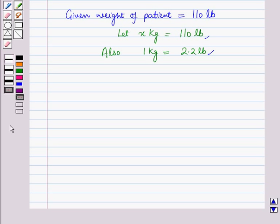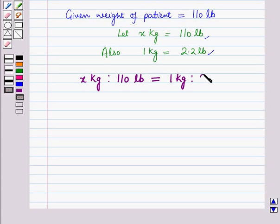From these two relations we set up an equation as: x kg is to 110 pounds equals 1 kg is to 2.2 pounds. Here we must note that on both sides of this equation, kilograms comes first then pounds. This is very important — it doesn't matter which unit comes first as long as they are in the same order on both sides of the equal sign.